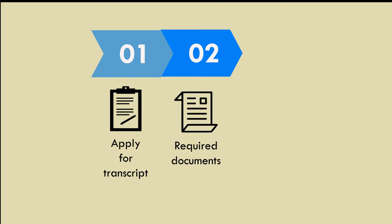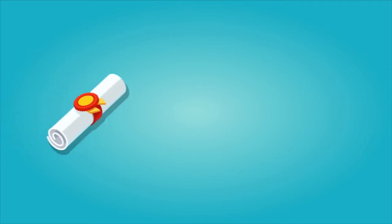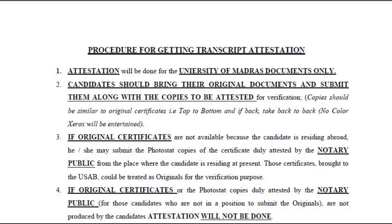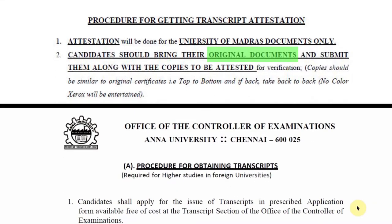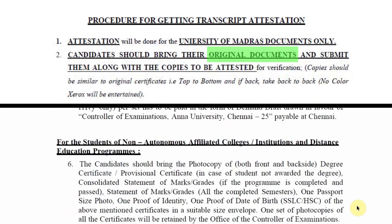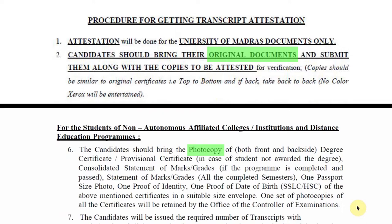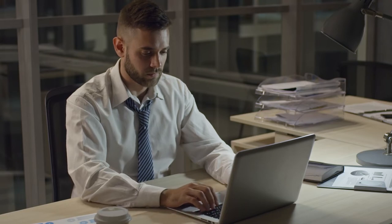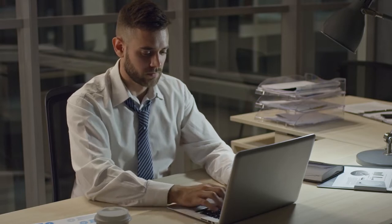Step two involves sending the documents requested by the university. These documents are generally your university degree and your mark sheet. Some universities want to verify and ask for original documents, while others are okay with just photocopies. There are cases where the university or institute will allow you to apply for transcripts online, make payment, upload the documents, enter WES's address, and the university will directly send your transcript to WES.